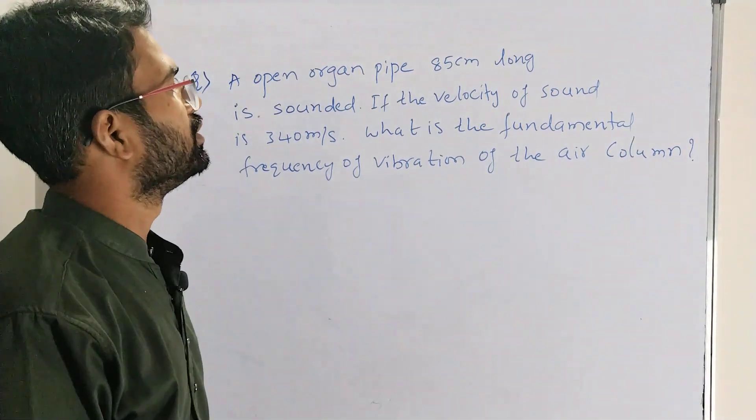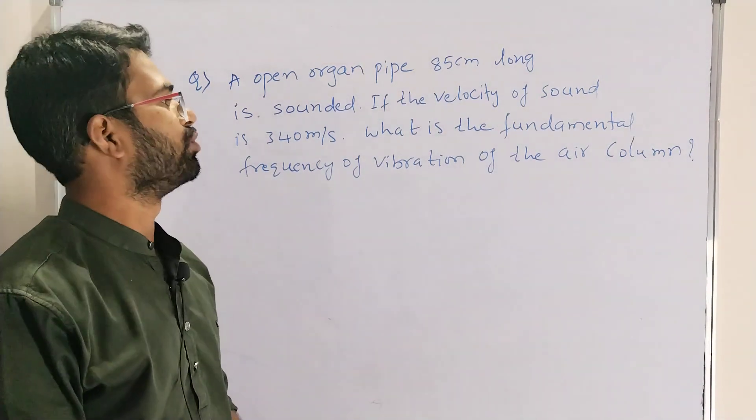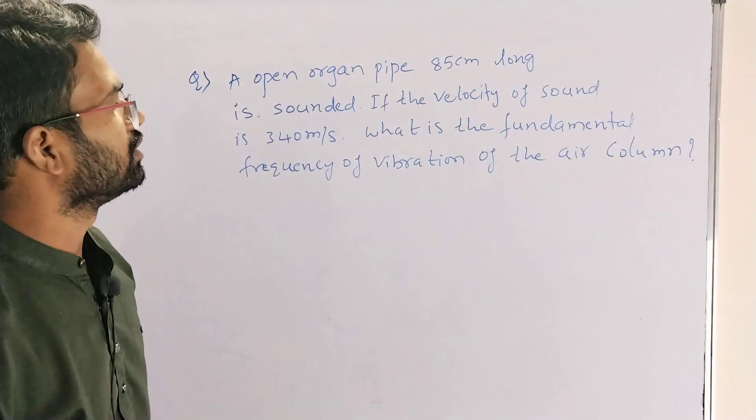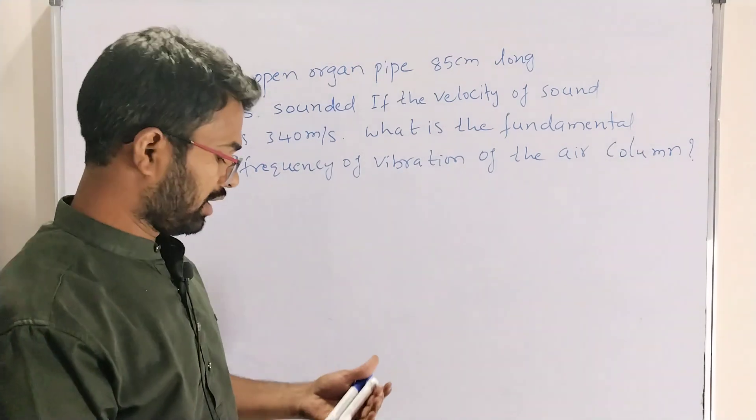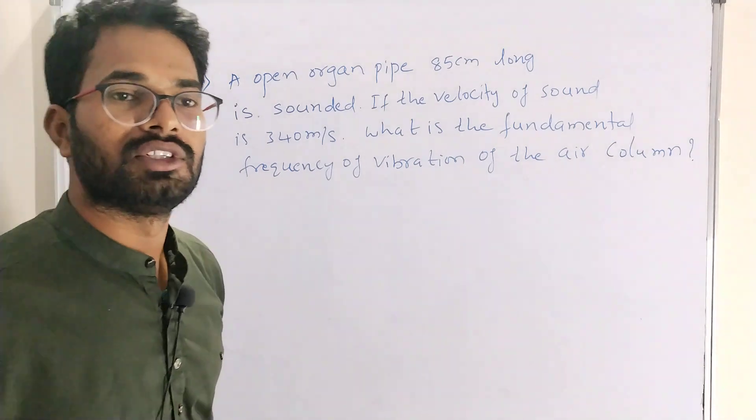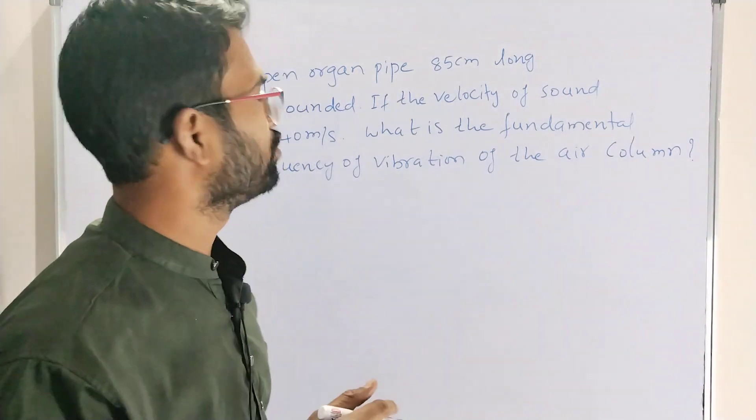An open organ pipe 85 centimeters long is sounded. If the velocity of sound is 340 meters per second, what is the fundamental frequency of vibration of the air column? From this question, first of all, we have to remember which type - open pipe.